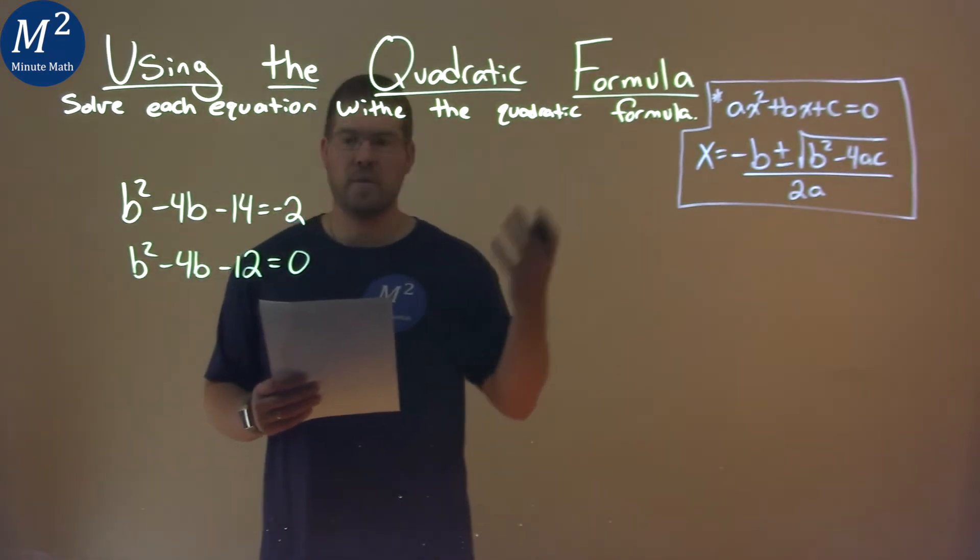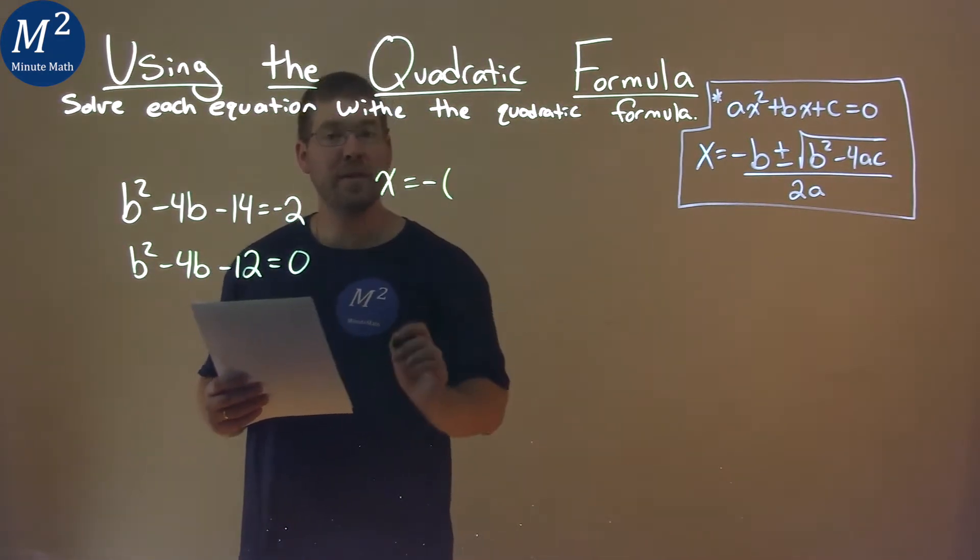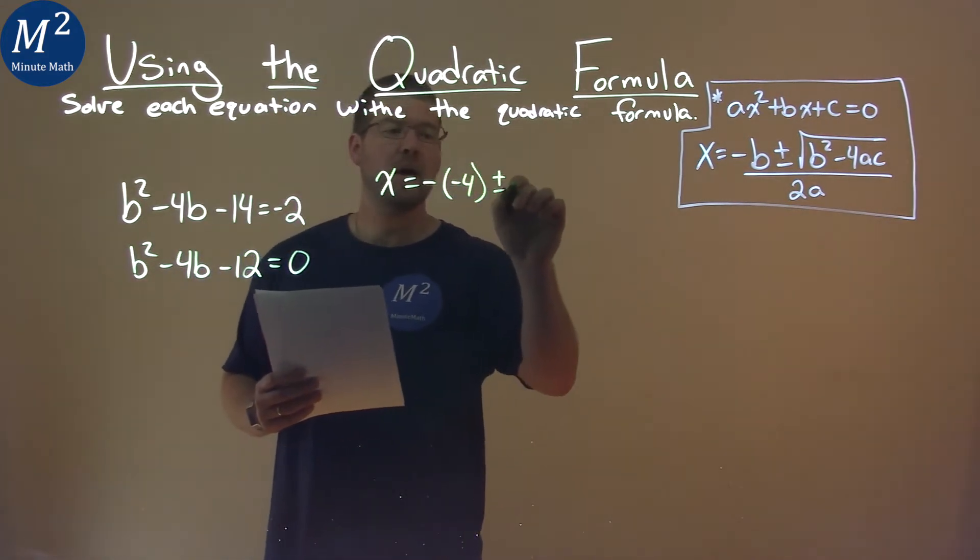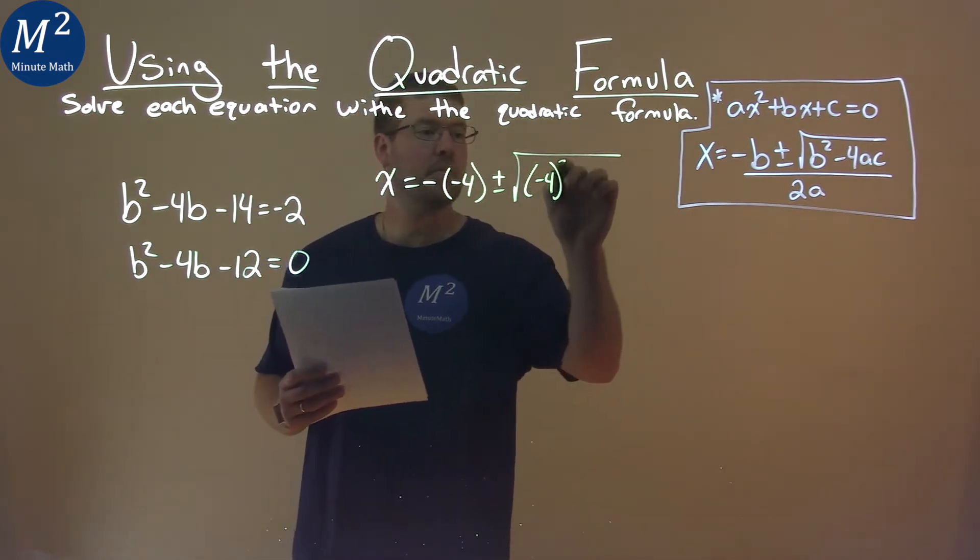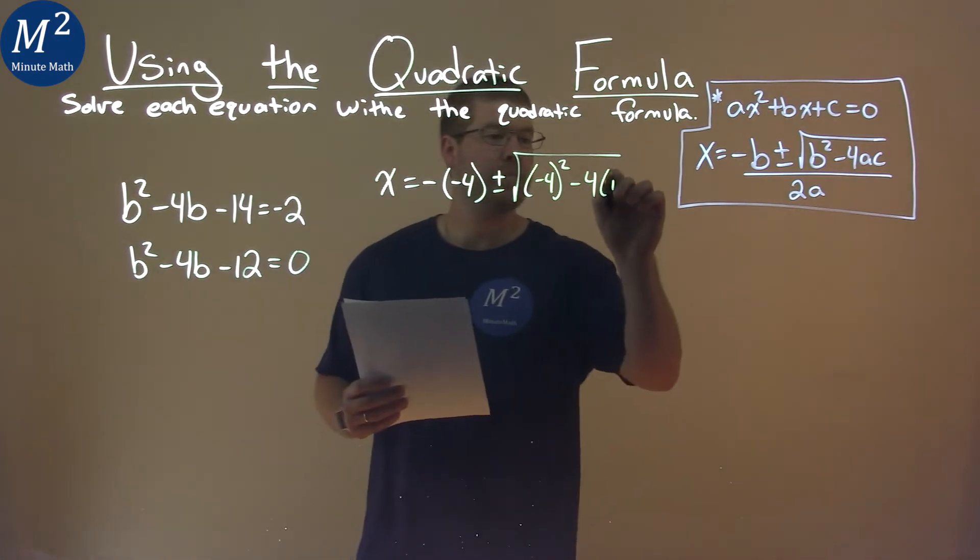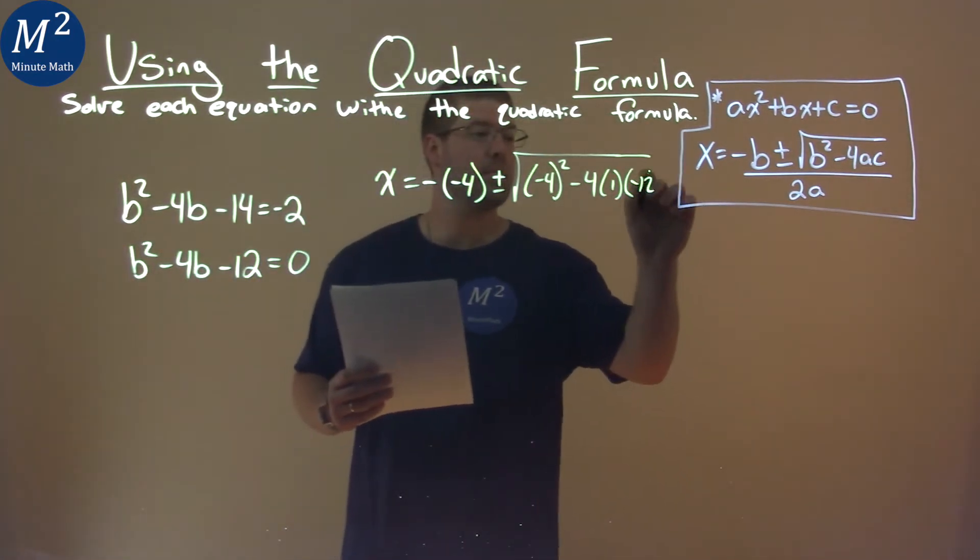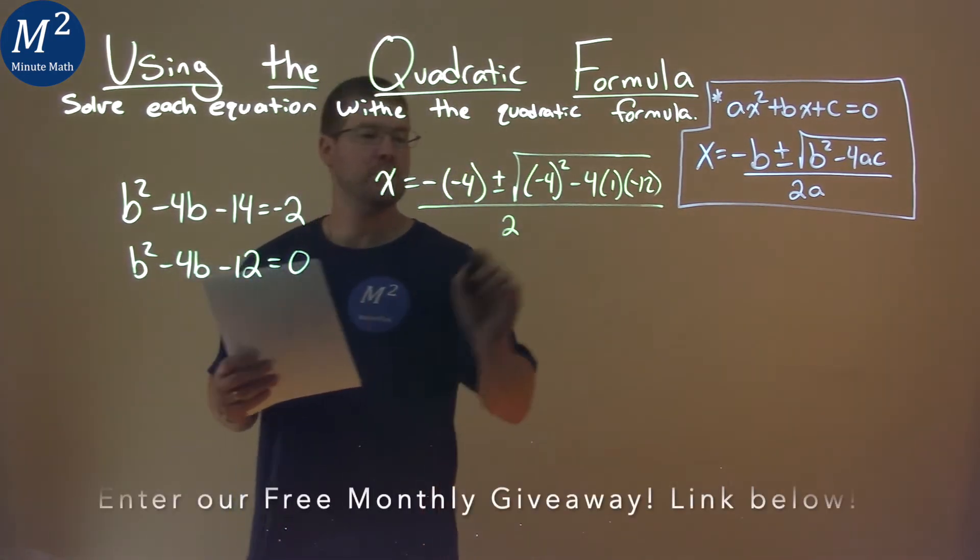From here I'm allowed to use the quadratic formula now. x equals negative b, and my b value here is negative 4, plus or minus the square root of b squared, negative 4 squared, minus 4 times a which is 1 times c negative 12, all over 2 times a which is 1.